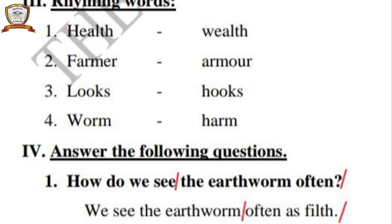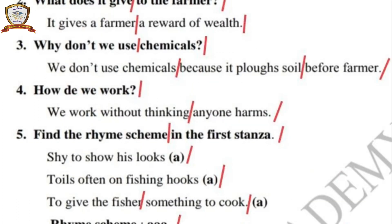Next - third section, rhyming words. In the poem there are rhyming words. They are: health, wealth. Farmer, armor. Looks, hooks. Worm, harm, charm.